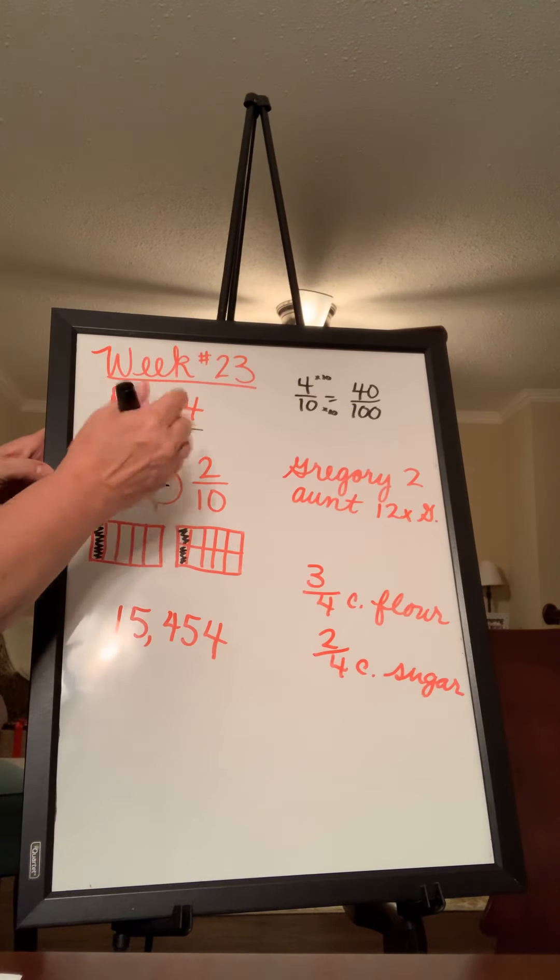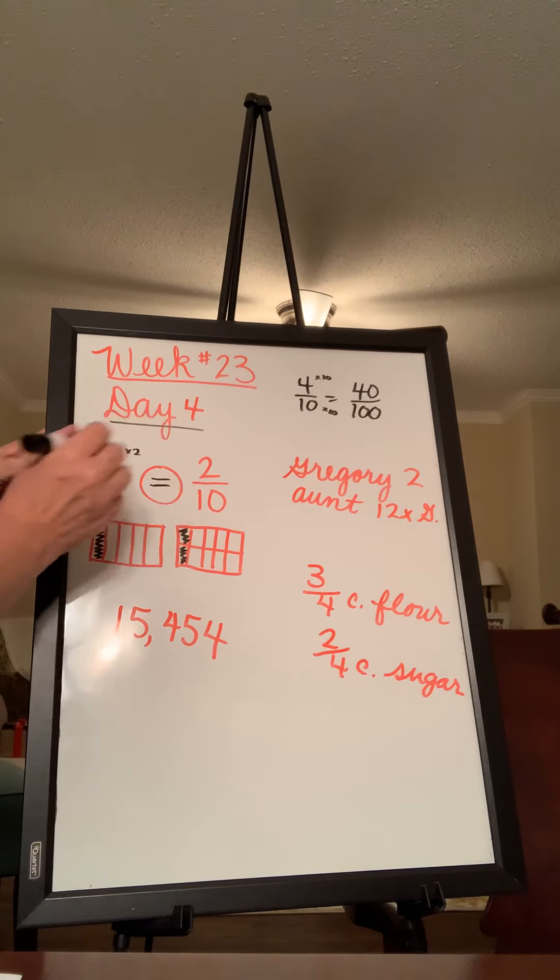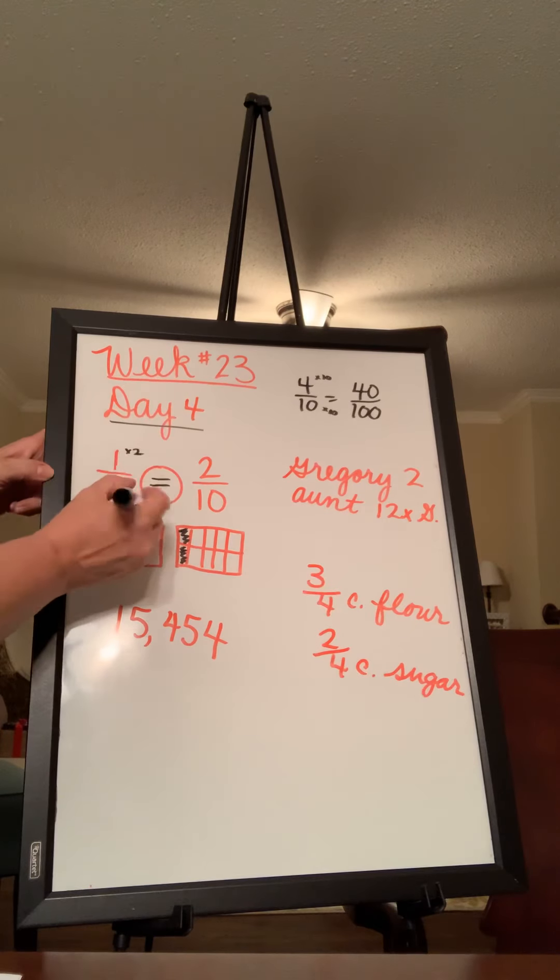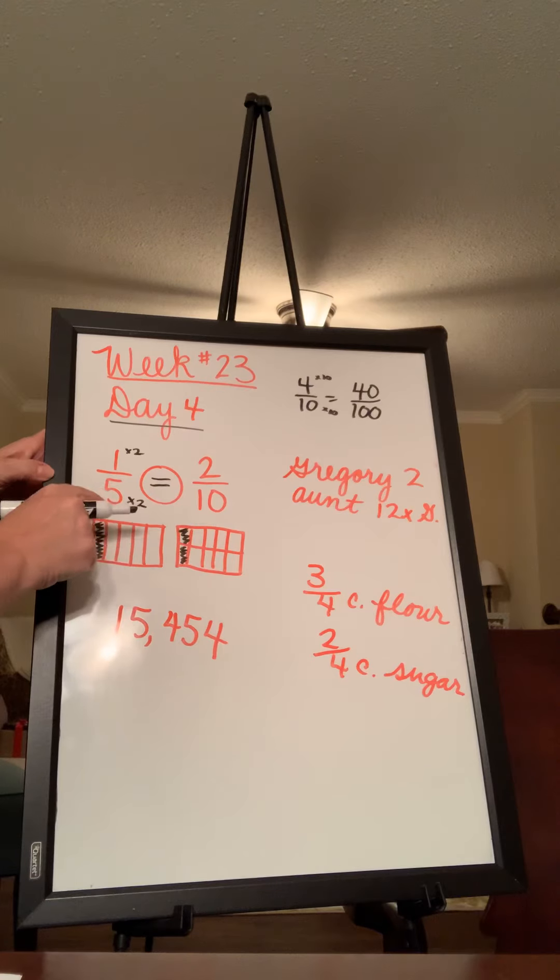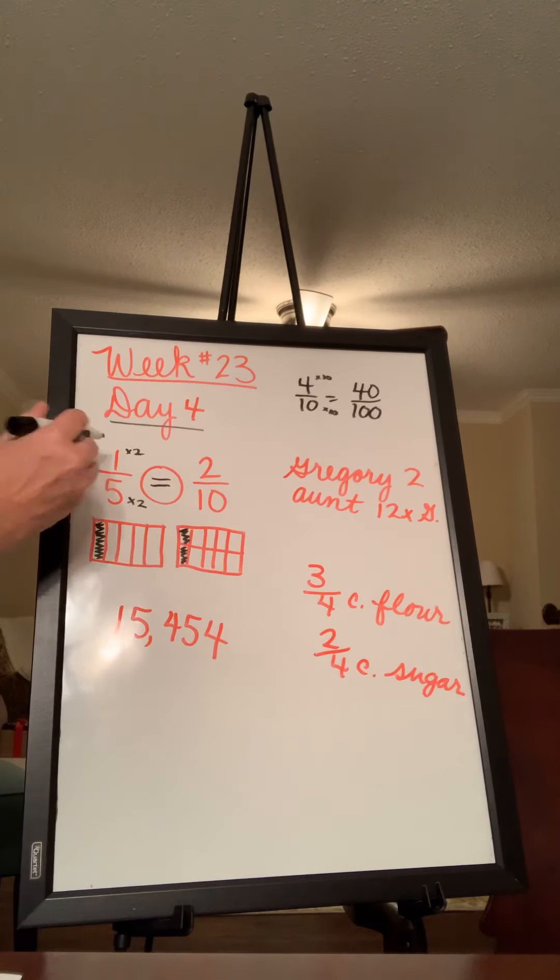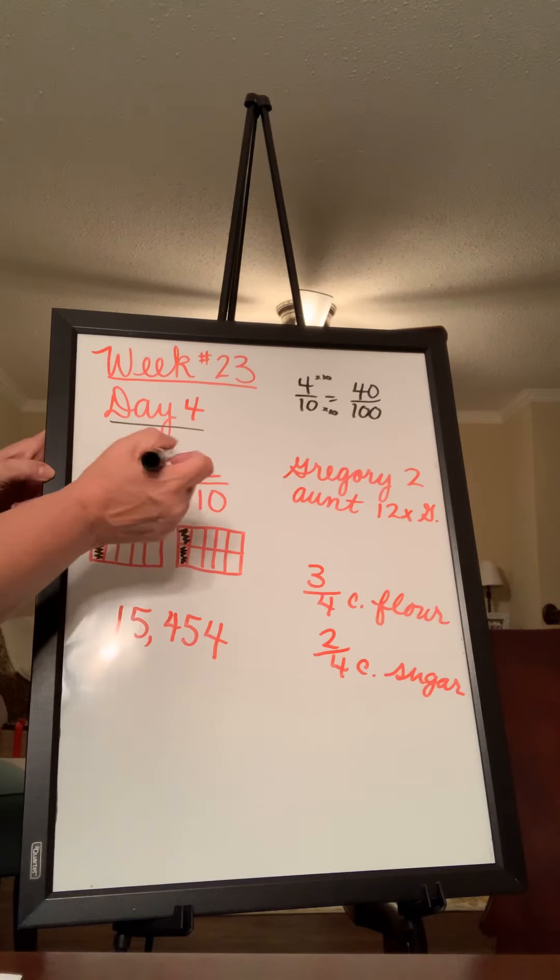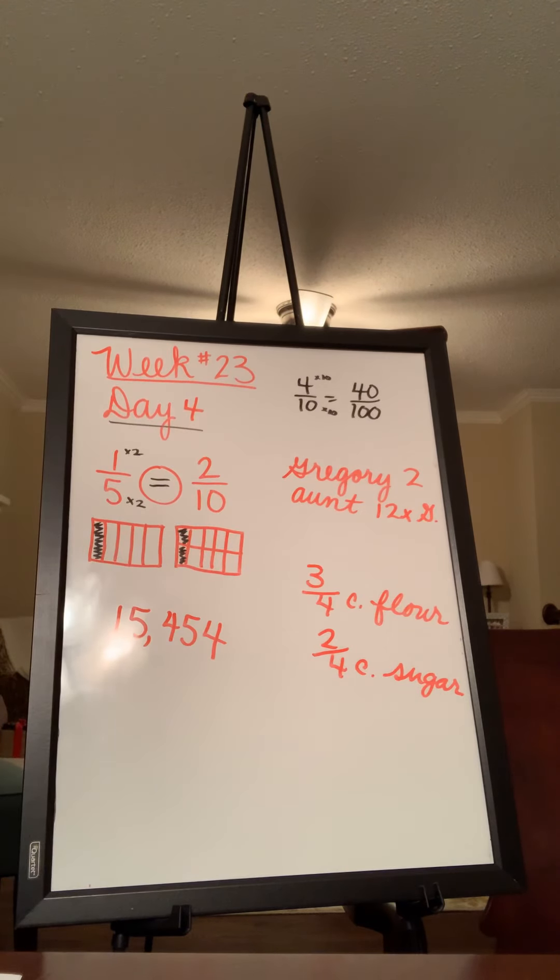1 times what is 2? Well, 1 times 2 is 2. So then we would have to multiply this by 2 also. 5 times 2 is 10. So because 1 times 2 is 2 and 5 times 2 is 10, they are equal because we multiplied both by 2 and got the same answer.